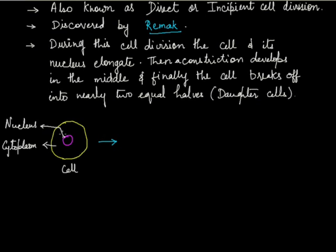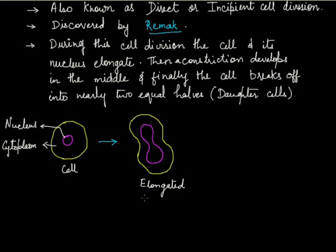This cell is now roughly spherical or circular in shape. Now this will elongate slightly. Also, the nucleus will elongate, as you can see in this figure.